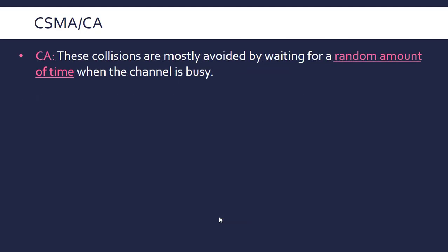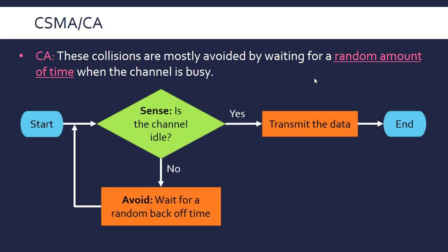What collision avoidance does is wait for a random amount of time when the channel is busy. Otherwise, if all devices are waiting to transmit and waiting for the channel to be clear, they're all going to send at the same time unless they wait for random amounts of time. If we put this in a flowchart, it's really useful — I've seen an exam question which asks you to do this.